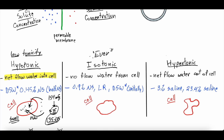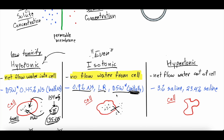Isotonic fluids have roughly even tonicity — the same as inside the cell — so there is no net flow of water into or out of the cell. If the cell has ten solute particles and the outside also has ten, tonicity is equal on both sides. Isotonic fluids include 0.9% normal saline, lactated Ringer's, and D5W initially — because once your body metabolizes the glucose, it becomes hypotonic free water. Isotonic fluids are often the fluid of choice for dehydration and fluid resuscitation since they won't cause cell swelling or shriveling.